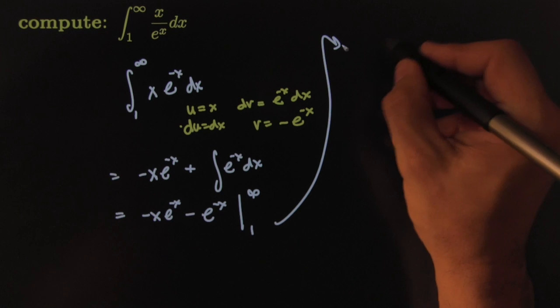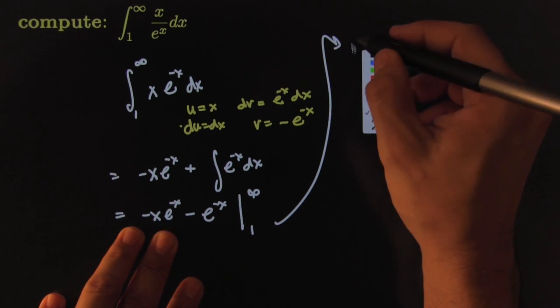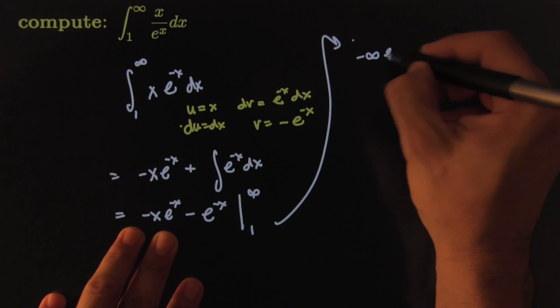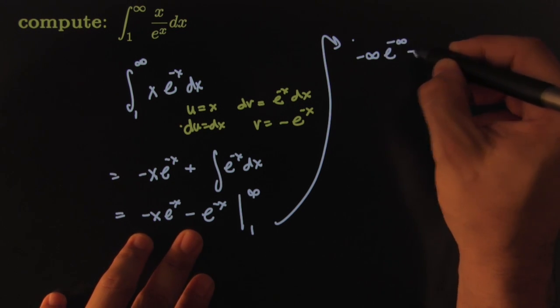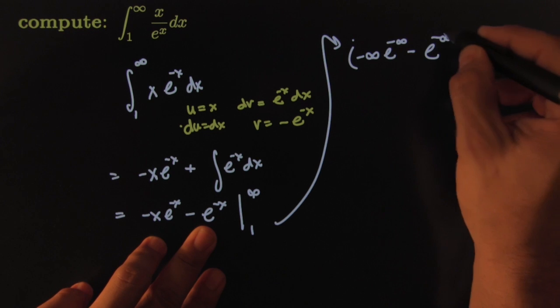That would put us at this spot here where I'm going to plug in infinity everywhere. So I will get negative infinity, e to the negative infinity, minus e to the negative infinity. That's what happens when we plug in infinity.